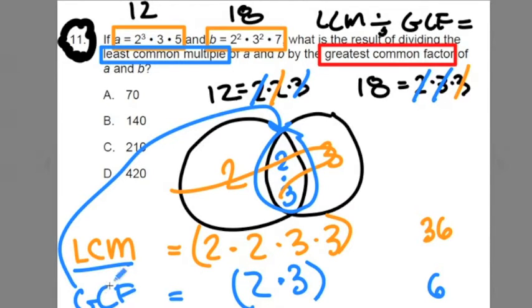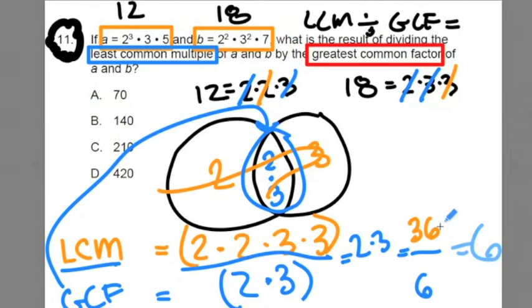Now the problem is asking us to find out the quotient or what happens when you divide the least common multiple by the greatest common factor. This problem, the Venn diagrams, helped us identify what the least common multiple is and the greatest common factor is. So the division part isn't that bad. We just cross out common factors and we're left with 2 times 3. And that's the same as, what's 2 times 3? 2 times 3 is 6, the same as 36 divided by 6 is 6.